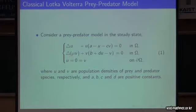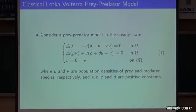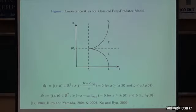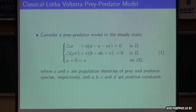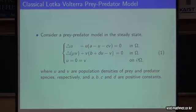Let's start with the classical Lotka-Volterra prey-predator model. We will consider the basic classical prey-predator model in steady state. Here, U is the population density of prey and V is the population density of predator. And A, B, C, D are positive constants.